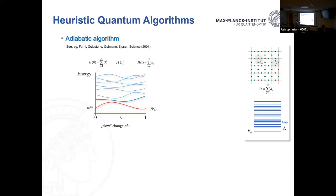The algorithm relies on the energy gap between the ground state and the first excited state not closing during the interpolation. If the gap doesn't close and you change the Hamiltonian slowly enough, you end up in the ground state. So the procedure is: start in the ground state of the known Hamiltonian, do dynamics corresponding to the adiabatic change of Hamiltonian as a function of time, end up in the ground state of the problem Hamiltonian, then measure the observable and repeat many times to compute the average.